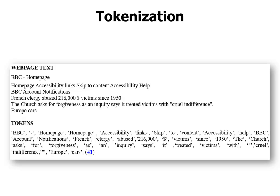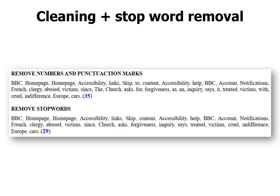A simple example: BBC homepage. After cleaning, these words are extracted and the tokens we get still include some numbers, dollar marks, and other symbols to be cleaned away. Originally there are 41 different tokens or words on the page. After removing numbers and punctuation marks, we have 35 remaining. Then after removing stop words, 29 are the result — 29 candidate words.